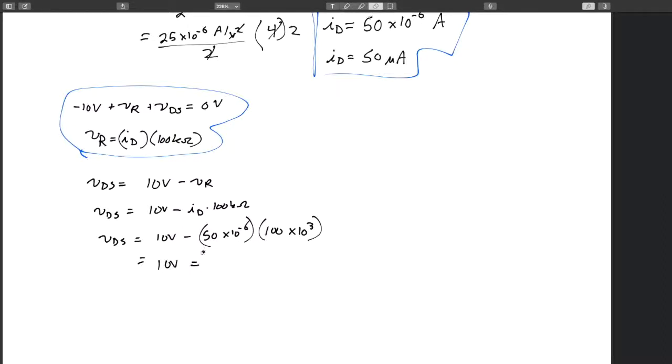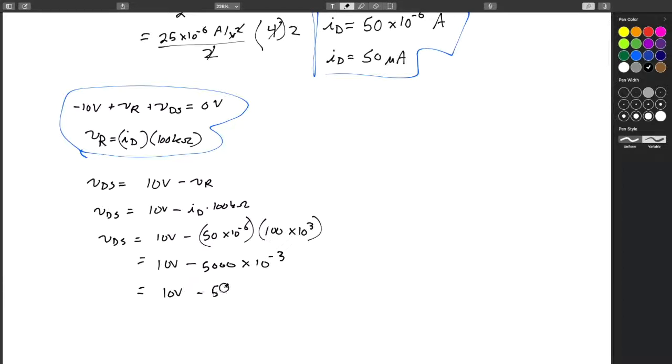So we'll say VDS equals 10 volts, moving this over to here minus VR or VDS will equal 10 volts minus ID times 100 kiloohms. All right, we can then go and look at this again. So VDS actually sub in some values equals 10 volts minus 50 times 10 to the minus 6 times 100 times 10 to the 3 equals 10 volts. Oops, that's not an equal. Minus what? 50,000, right? Gosh, I can't do any math today. 5,000 times 10 to the minus 3, right? Yep, okay. So that's basically just 5 then. So 10 volts minus 5 volts. VDS will equal 5 volts.